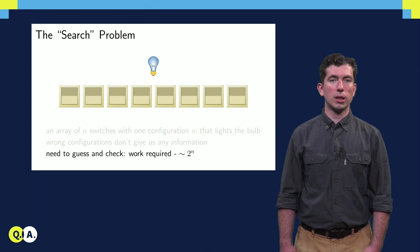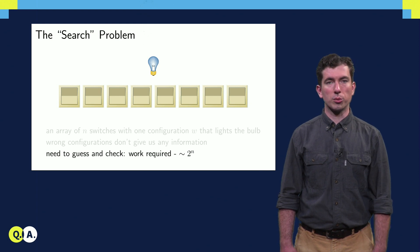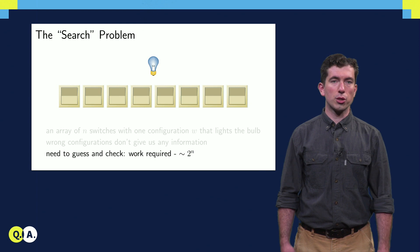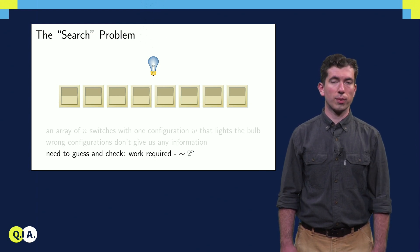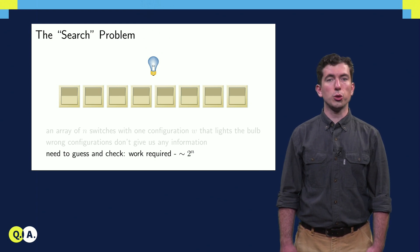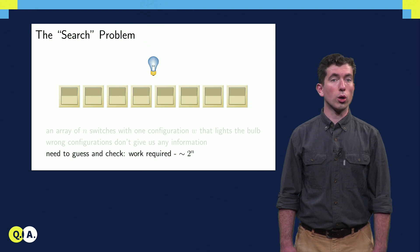For this problem, if we limit ourselves to classical algorithms, there's no essentially better strategy than to guess and check repeatedly until we find W, the correct configuration. This requires a number of switch flips that scales as 2 to the M, which can get quite large as N grows.